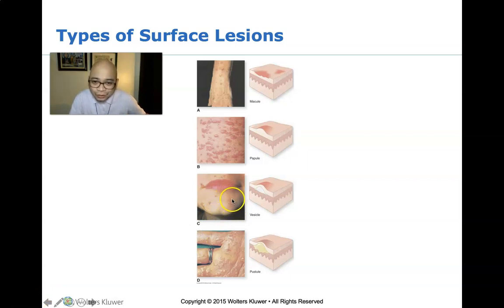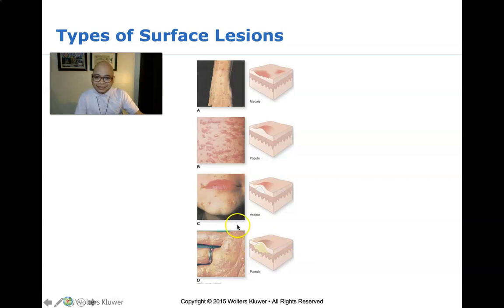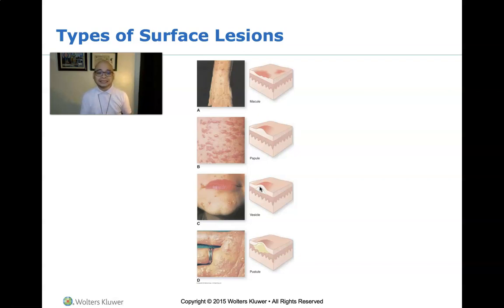In figure C, you would notice that it is filled with fluid — this is called a vesicle. A vesicle is a small fluid-filled blister on the skin. A close-up picture shows herpes zoster skin lesions with fluid inside. The fluid inside these vesicles may be clear, white, yellow, or sometimes mixed with blood.